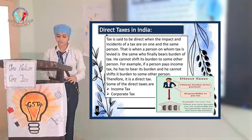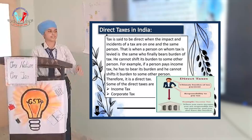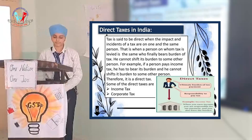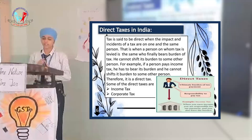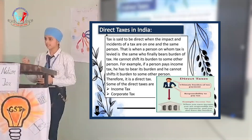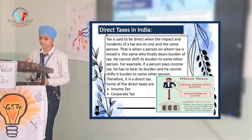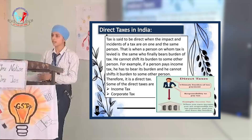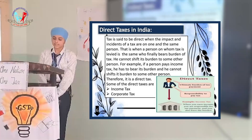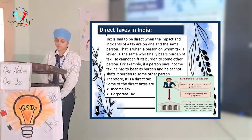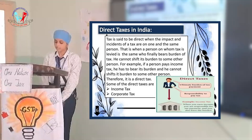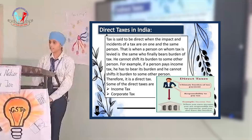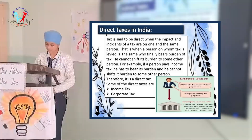There are two types of taxes. Some examples of direct taxes are income tax and property tax. The next type is indirect tax. An indirect tax is one where the impact and incidence fall on different persons — the burden can be shifted to another person. Those who pay these taxes to the government can pass the burden on to others, such as consumers.